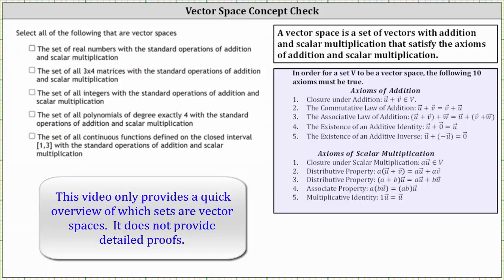A vector space is a set of vectors with addition and scalar multiplication that satisfy the axioms of addition and scalar multiplication shown below. We have five axioms of addition and five axioms of scalar multiplication.